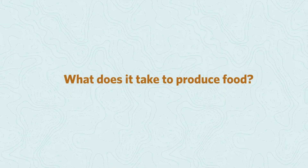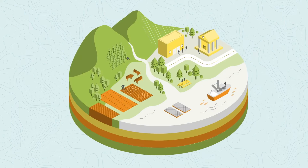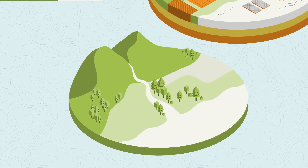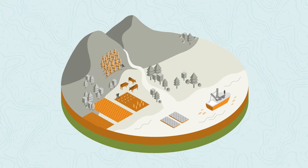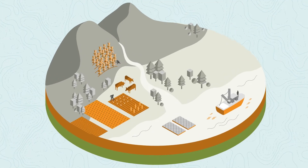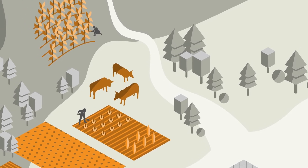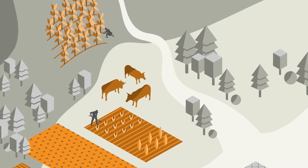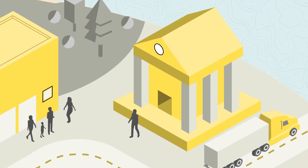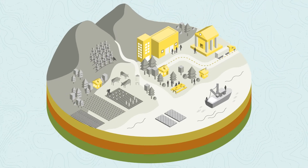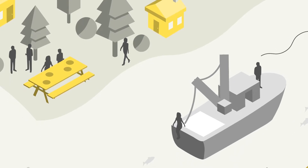What does it take to produce food? Think of it in layers. We start with a place — the plains, the river basins, the foothills, the coastal shores where food is grown or raised. Then come the specific farming practices typical there, and then the forces of supply and demand, public policies. But all of this only comes to life when we add local communities and cultures.